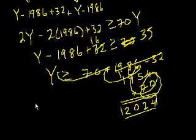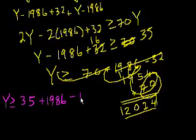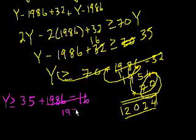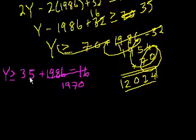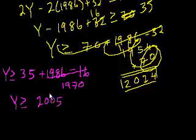Let me rewrite it here. So I have y is greater than or equal to 35 plus 1986 minus 16. I just added 1986 to both sides, subtracted 16 from both sides. So this is equal to 1970. And then we have 35 plus 1970, so y has to be greater than or equal to 2005, which is choice C. And I'm out of time. Sorry for that careless error. I'll see you in the next video.